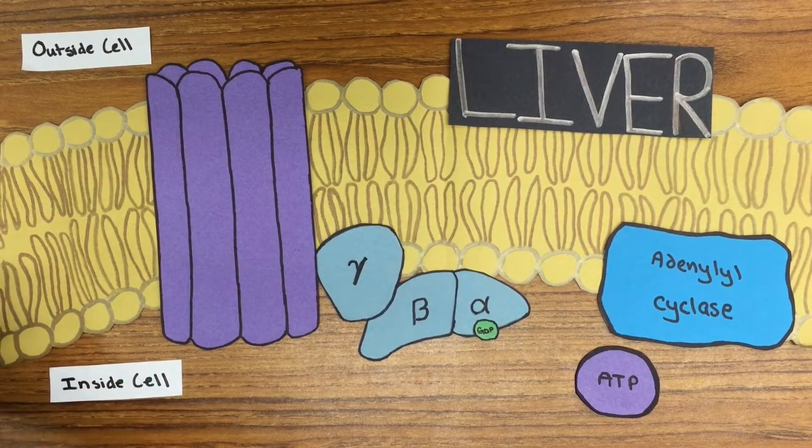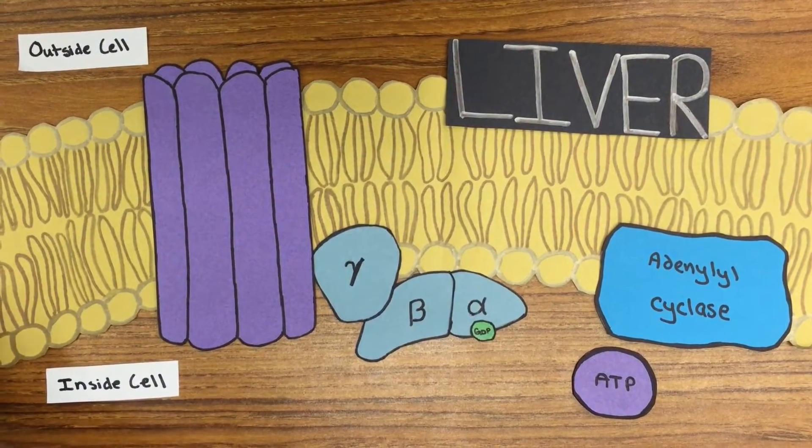Glucagon begins the pathway by binding to a special protein receptor called a G-protein-coupled receptor, or GPCR.